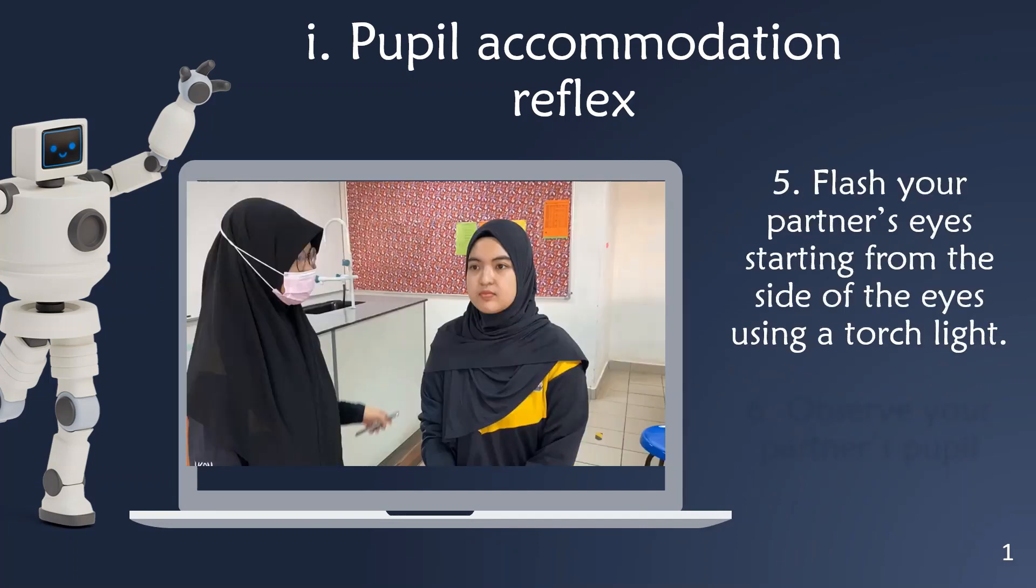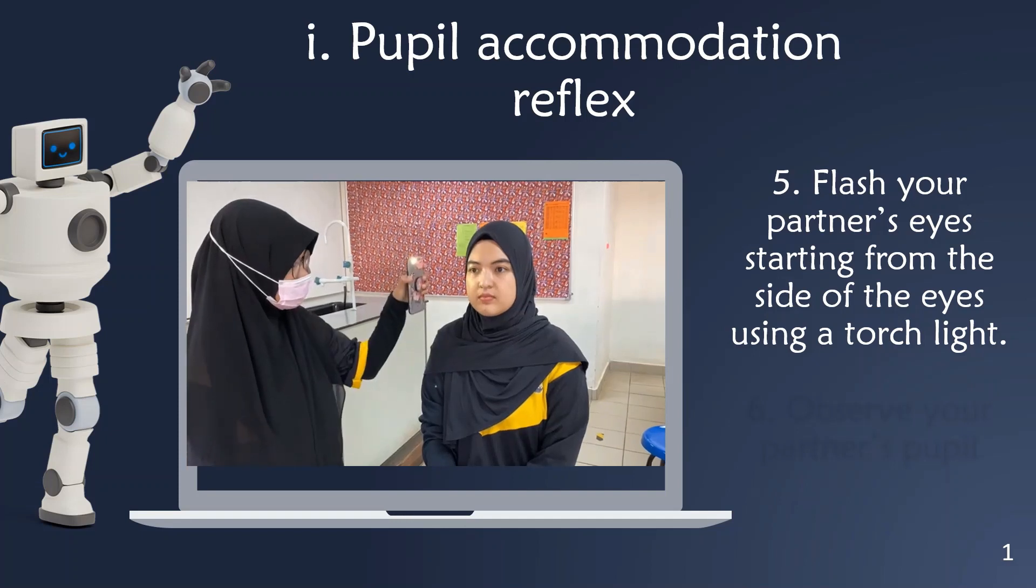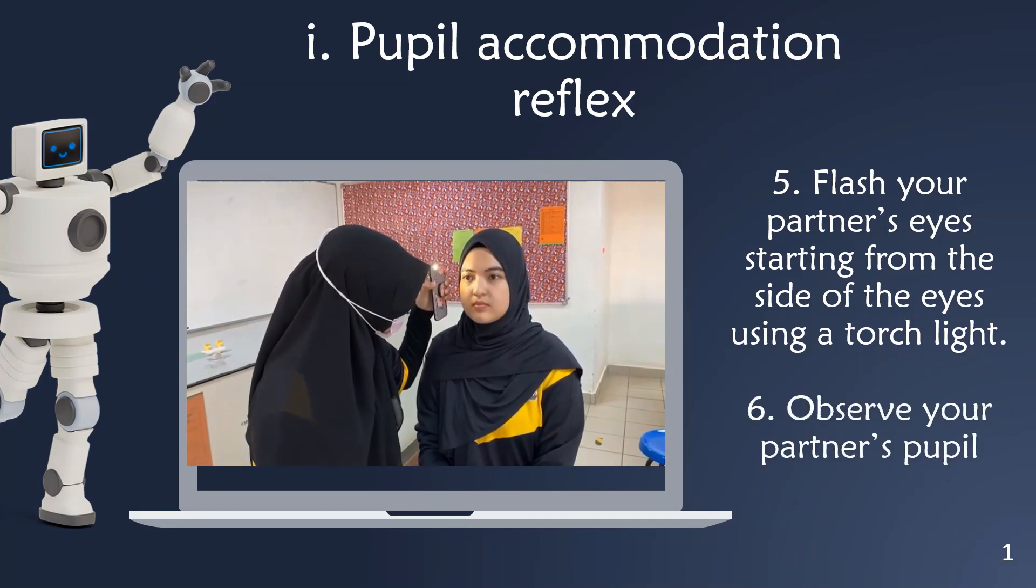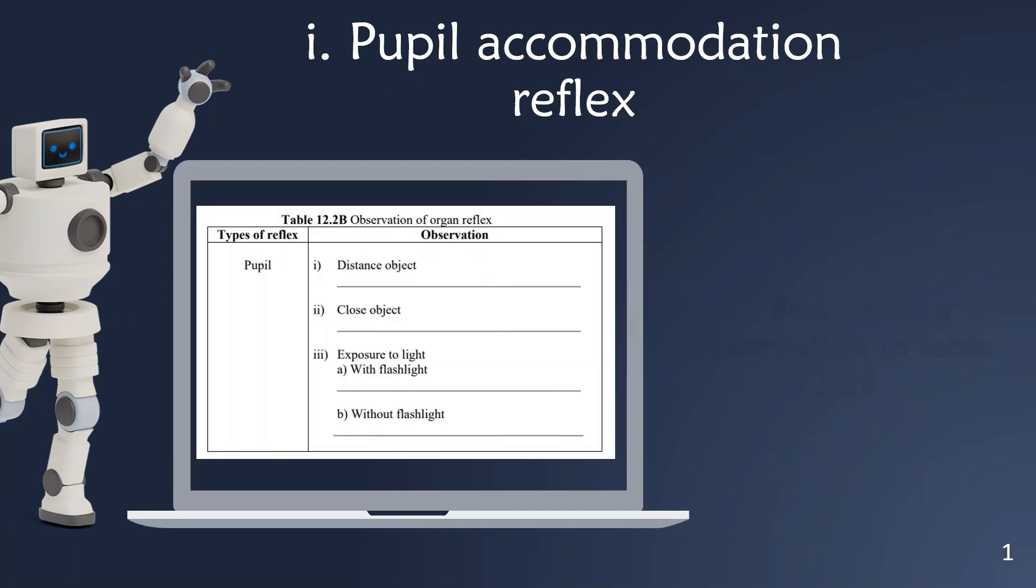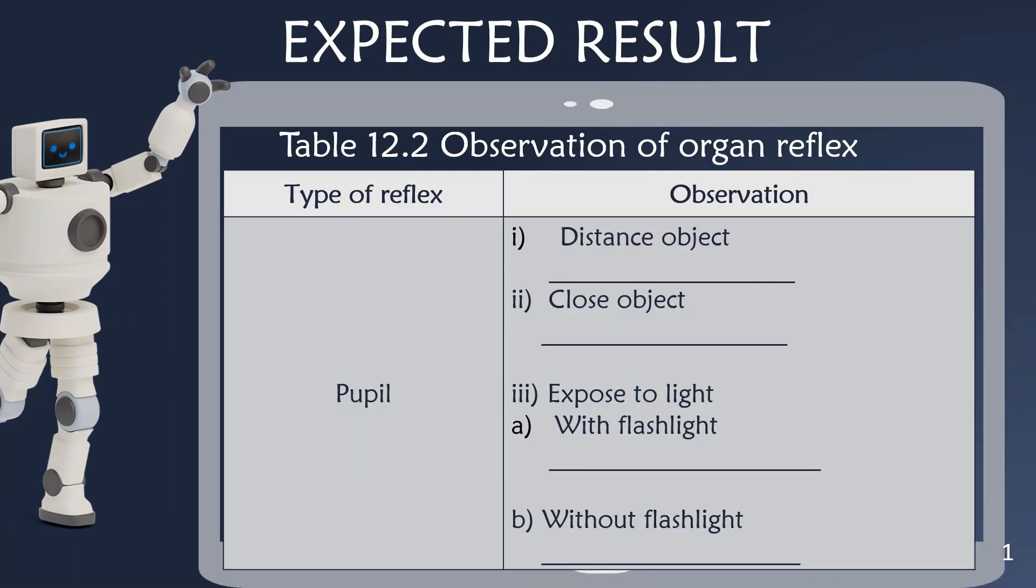Next, flash your partner's eye starting from the side of the eyes using a torch light. Observe your partner's pupil. All of the results obtained from this experiment should be recorded in the table 12.2b. The expected results for these experiments are as follows.